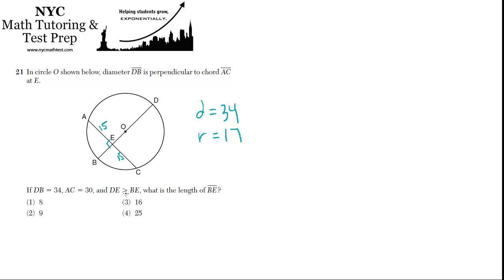DE is greater than BE — the only reason they're telling us that is so we know this chord doesn't land on the other side of the center of the circle. And they want to know what is the length of BE — that's what we want to find.